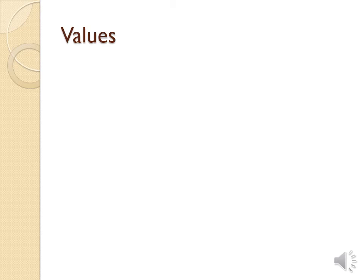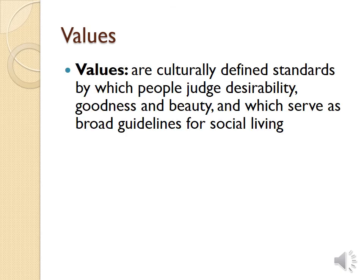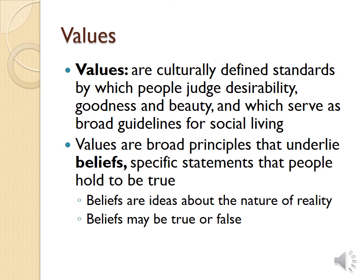So looking at things from an outsider's perspective, as an American, what are our values? It's really easy to start with anything stated in the Bill of Rights. Values are culturally defined standards by which we judge what's desirable, what's good, what's beautiful — a very broad guideline for social living. Values are very broad principles, things like we value freedom of speech, we value equality. And beliefs are a bit more specific statements that people hold to be true — ideas about the nature of reality. Beliefs can be true or false, and like values, they are hard to change.